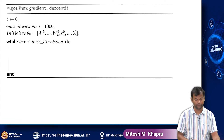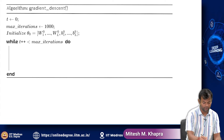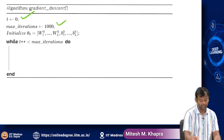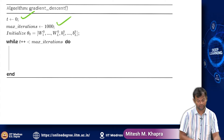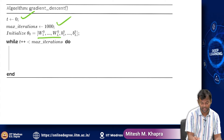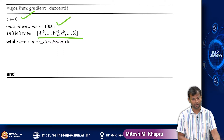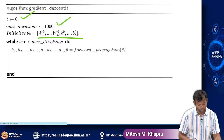I am going to start with the gradient descent algorithm. You start at time step 0, run it for some thousand iterations, and initialize all the weights in the network. At every stage, you will first compute all the pre-activations and activations.